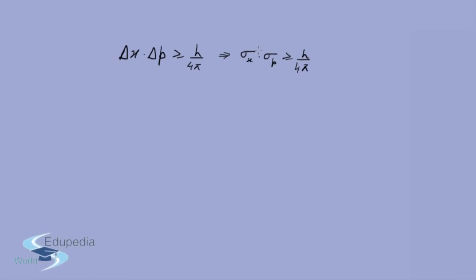Because this is quantum mechanics, every time you measure momentum you will not get the same value — you will get a range of values which depends on the probability density. From those values you can calculate the average, the expectation value, and of course the variance and the standard deviation. So we have to prove that sigma x times sigma p is greater than or equal to h by 4 pi.